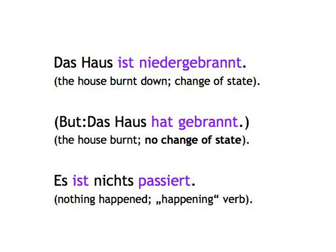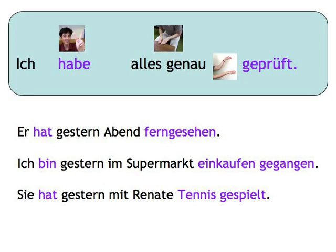A couple more things. Do you remember the verbal frame? The perfect tense is a major application for it. The auxiliary verb haben or sein, in its finite form, is in second position. The rest of the verb follows with the past participle at the very end of the sentence. For example: Ich habe alles genau geprüft. Er hat gestern Abend ferngesehen. Ich bin gestern im Supermarkt einkaufen gegangen. Sie hat gestern mit Renate Tennis gespielt.